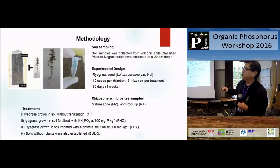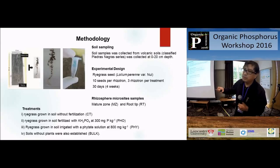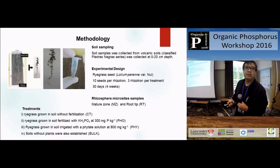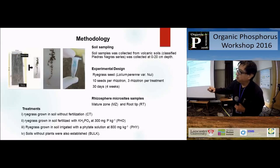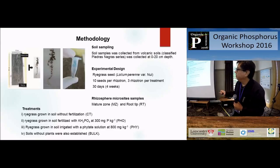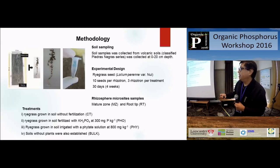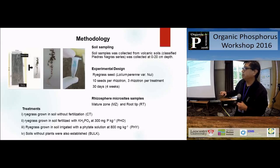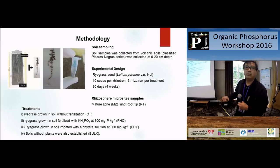The experimental design is very simple. We grow the plant and detect differences, focusing on the mature zone and root tip - we made a comparison. It takes 30 days, because the plant grows very fast and we didn't want the compartment effect. We took very careful samples. The treatments are: control, fertilization, second treatment with phosphate, third with phytate solution, and fourth is soil without plant. Treatments one, two, three include plant.